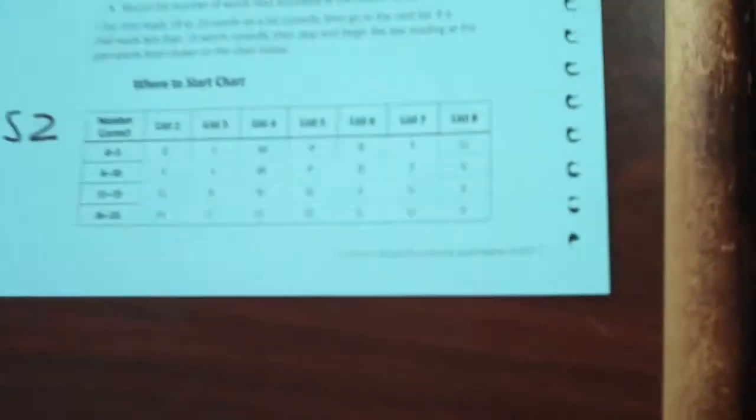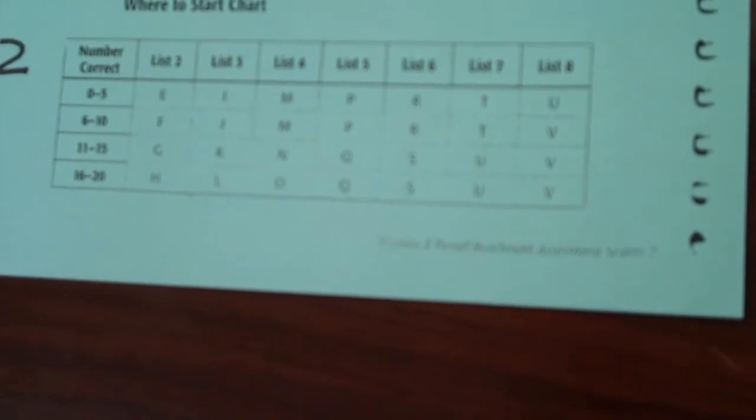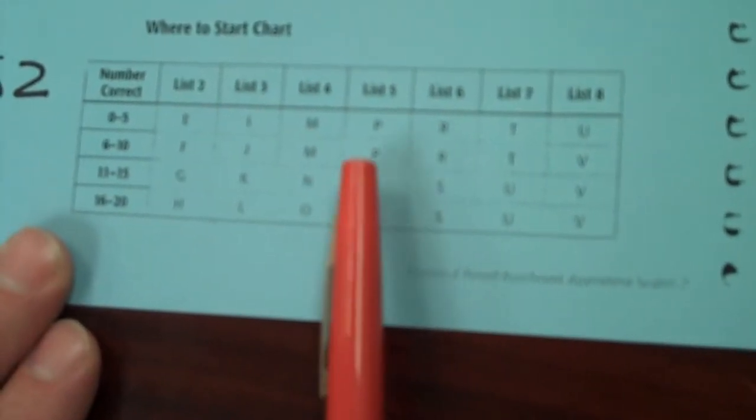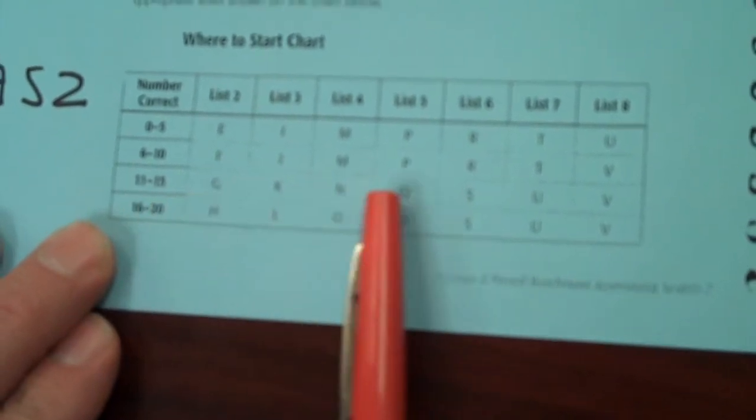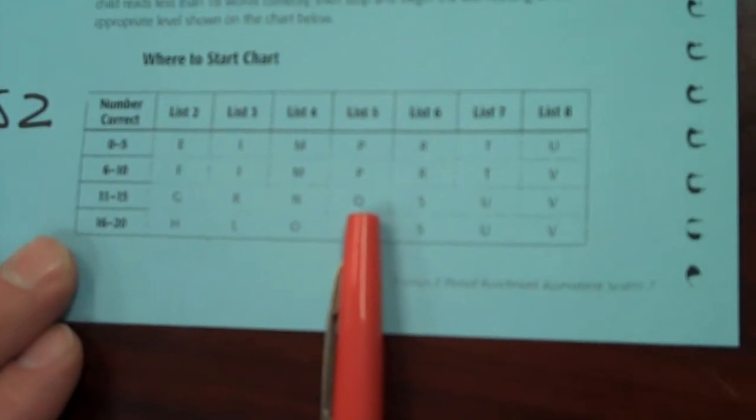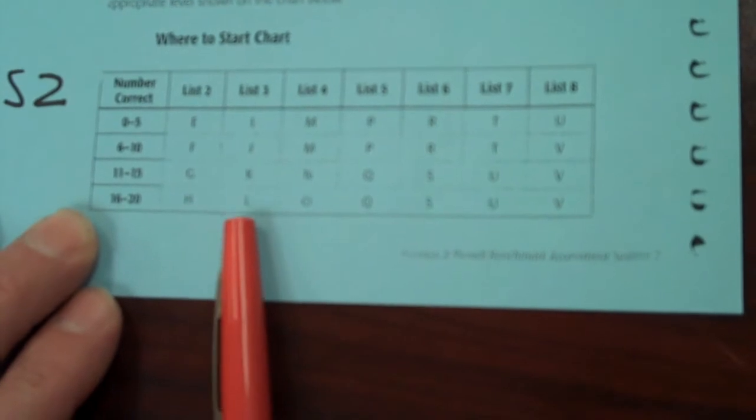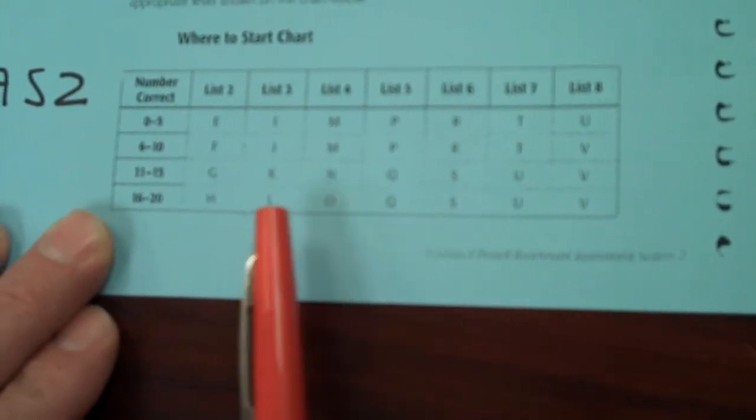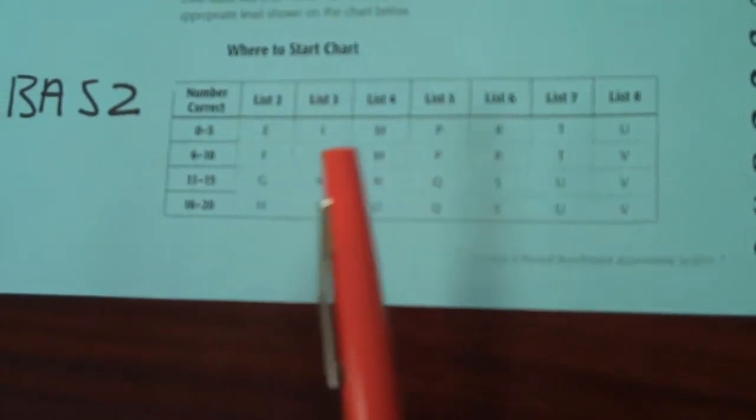You'll go over here to the BAS 2. You'll take your word list, determine which word list you're on and how many they got correct, matching up with where you are on your list. If you're on list five and you got 11 to 15 correct, you would test them on level Q. If, in the case of the one that I've pulled here, a level L, they would have got on list three. They would have got 16 to 20 correct, and we would pull the test for level L, which is what I have here. This is the level L text.